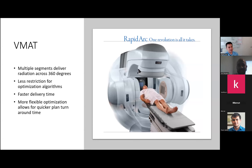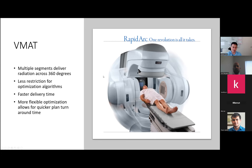The way to improve on IMRT is rotating the gantry all the way through. Varian called it RapidArc; the technical term is VMAT. One revolution was the original claim, but we've gotten to the point where we do at least two arcs, and it's not unusual to see three or four arcs on a plan. VMAT delivers multiple segments across the entire 360-degree rotation around the patient. The exception is for lung plans or anything requiring lateral positioning — there you'd do just a 180-degree arc or a little less.